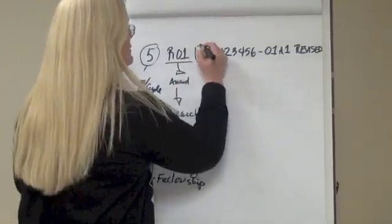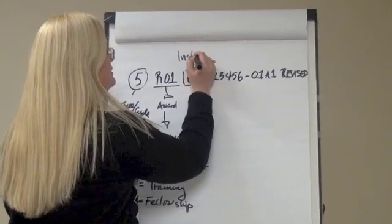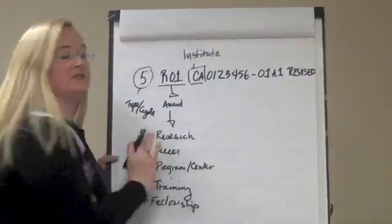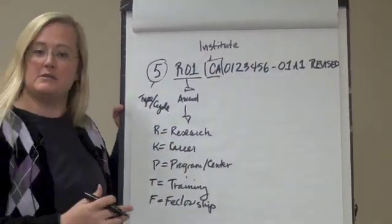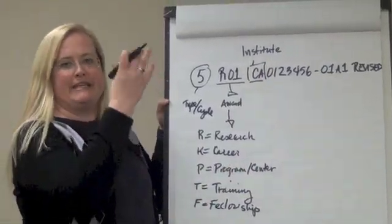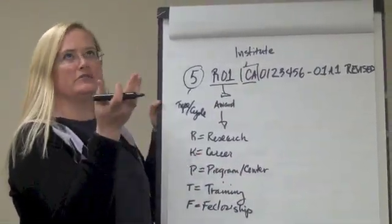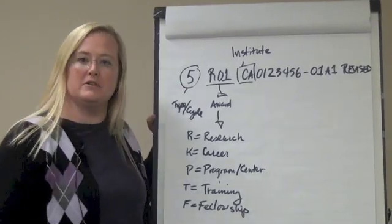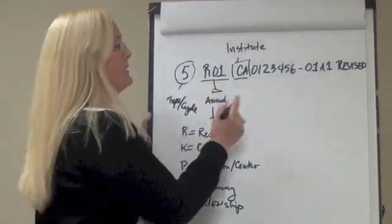Then here, you have your institute. Because it is the National Institutes of Health, each institute has its own code. CA is cancer and DK is digestive disorders and kidney diseases. There's a whole range of them. But that's going to tell you where it's being funded.